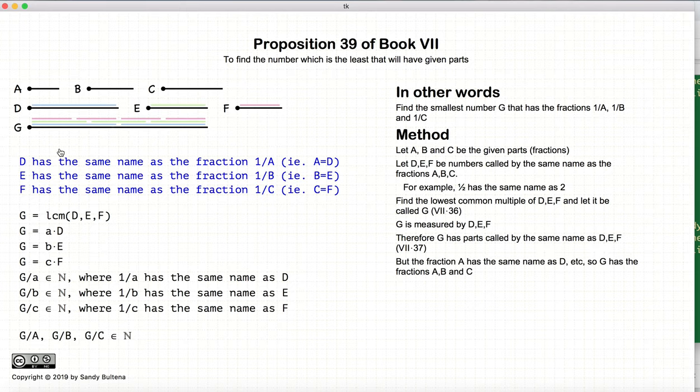But D has the same name as 1 over capital A, which is the same as 1 over small a. Therefore, big A and little a are the same. So therefore, there is G can be divided into fractions of A, B, and C, and still be a whole number.